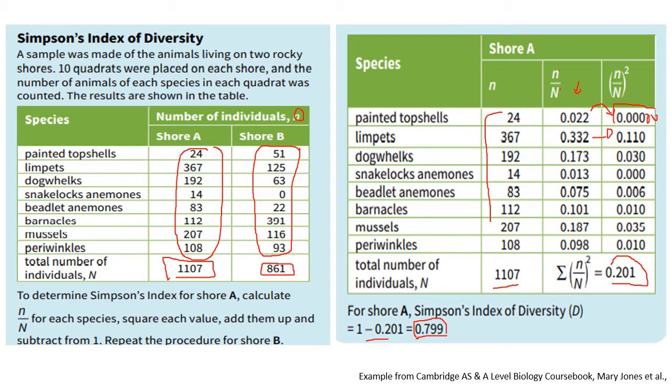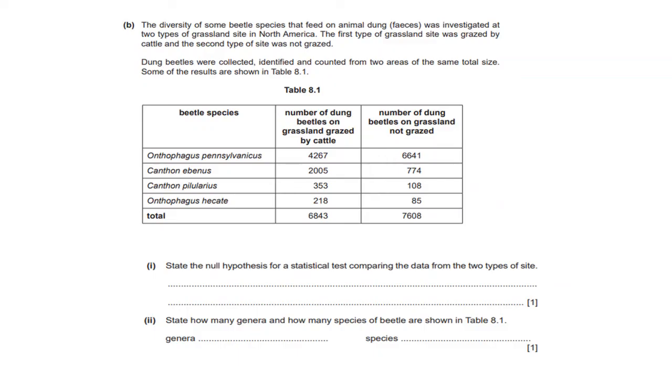You can try to calculate for shore B on your own and see what value you come up with. So this is a question from an exam paper and I just thought it would be lovely to share it with you guys so that you can see how CIE might structure a question in this regard. So here it says the diversity of some beetle species that feed on animal dung was investigated at two types of grassland sites in North America. The first type of grassland site was grazed by cattle and the second type of site was not grazed. Dung beetles were collected, identified, and counted from two areas of the same total size. Some of the results are shown in table 8.1.